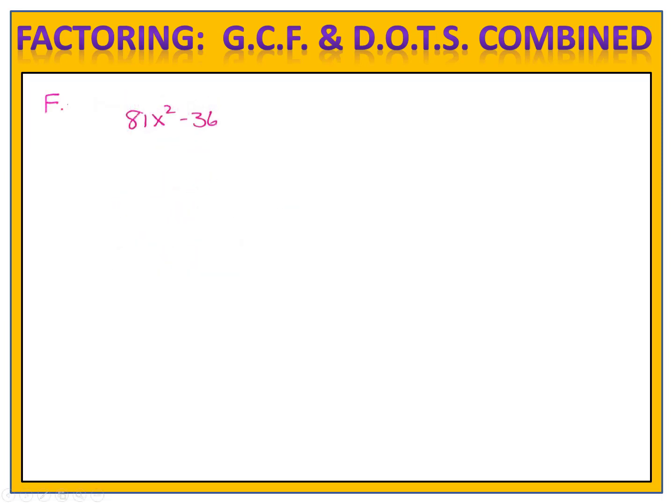Something interesting that happens on occasion is when we start with a difference of two perfect squares that actually has a common factor built into it. 81x squared minus 36 is a problem just like that. If you take the advice I've always given you, you'll begin by factoring out the greatest common factor of 9, leaving us with 9x squared minus 4 in the parentheses. You'll notice that 9x squared minus 4 is a difference of perfect squares.